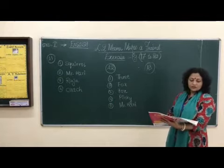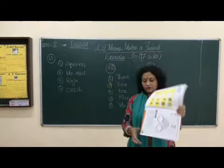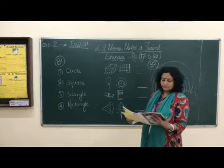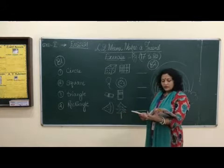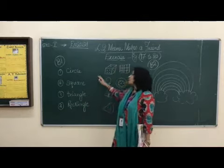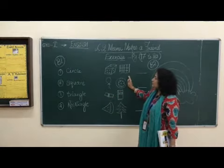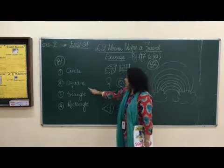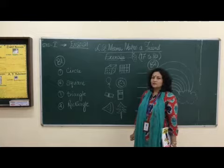Now let's shift to exercise V1, that is 'match the following.' We will do this match the following. We are given shapes and the objects corresponding to those shapes on the opposite side. We are supposed to write the numbers in the answer boxes. We are not going to draw matching lines because your book will look untidy.